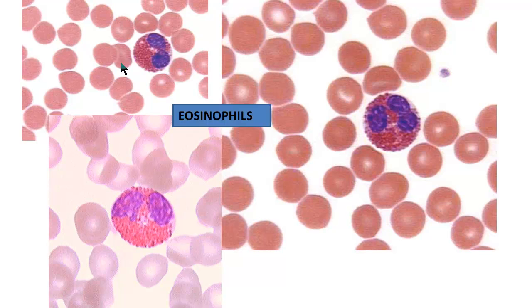Eosinophils are cells that help fight parasitic worms and also play a role in allergic reactions — we see higher numbers of these cells in people with allergies. What's characteristic about eosinophils is their red cytoplasm: when these cells are stained, granules in the cytoplasm stain red, so look for that red color to identify them.